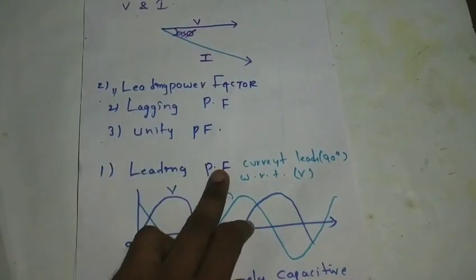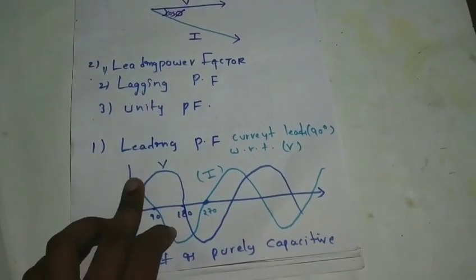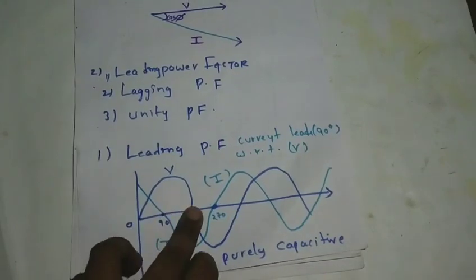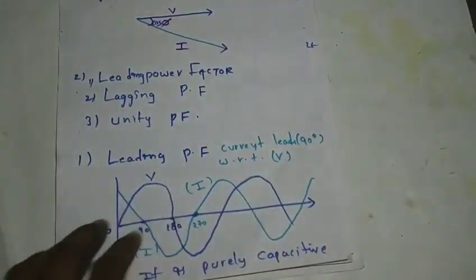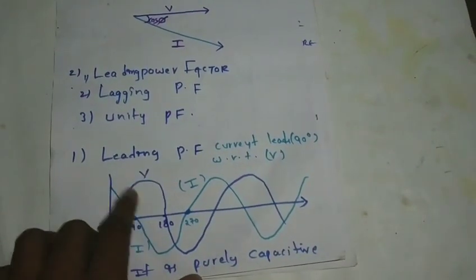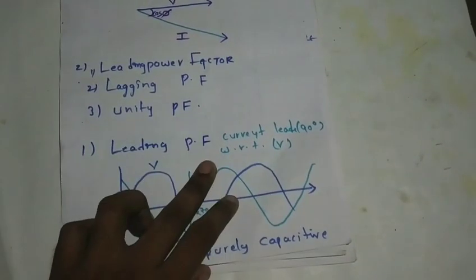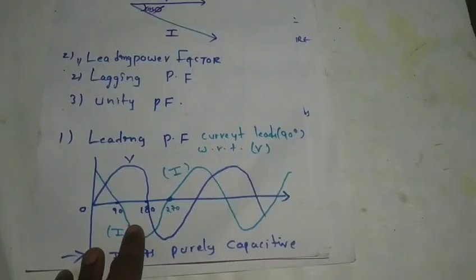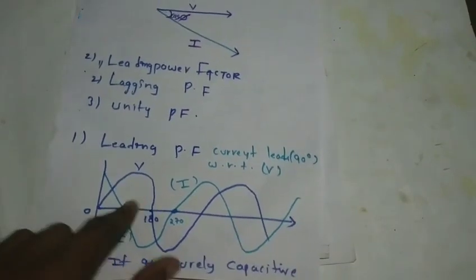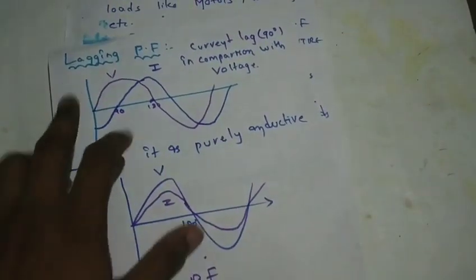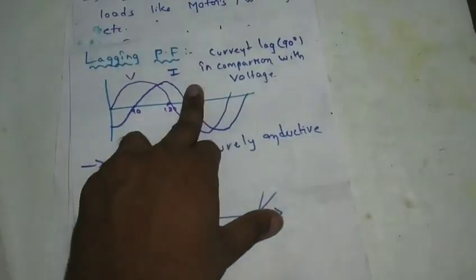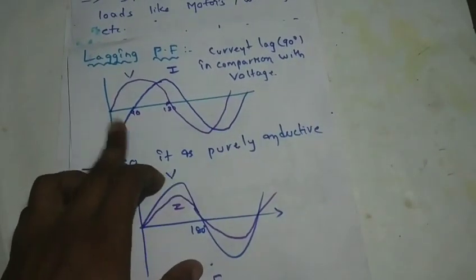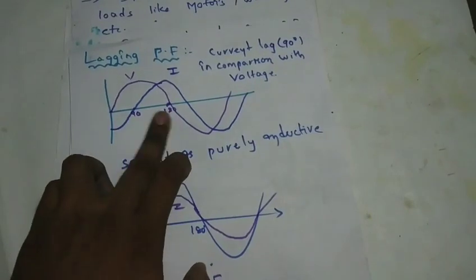The first type is leading power factor. In a leading power factor, current leads the voltage by 90 degrees. The current is ahead of the voltage by 90 degrees. These are leading power factor conditions where current leads voltage.